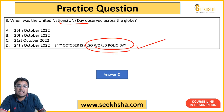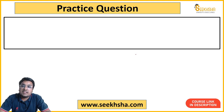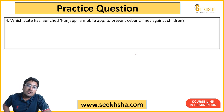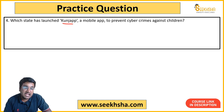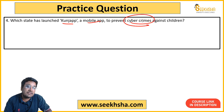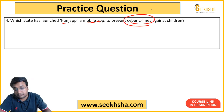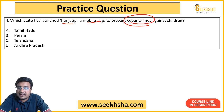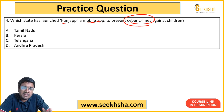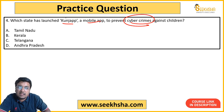Fourth question: A state launched an app called Kunj App — a mobile app that works to prevent cyber crimes against children. The options for which state it belongs to are: Tamil Nadu, Kerala, Telangana, or Andhra Pradesh. The key things to remember are the app's name, its purpose of preventing cyber crime against children, and the state it belongs to — no need for deeper details.